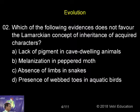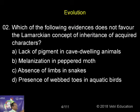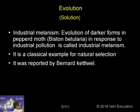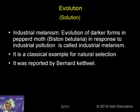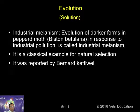Melanisation in peppered moth is a classical example of natural selection, not the Lamarckian concept. Although it is a character that is acquired in relation to adaptation, it is nature that selects the right type of individuals. For example, industrial melanism — nature selects the fittest individuals suited to survive.